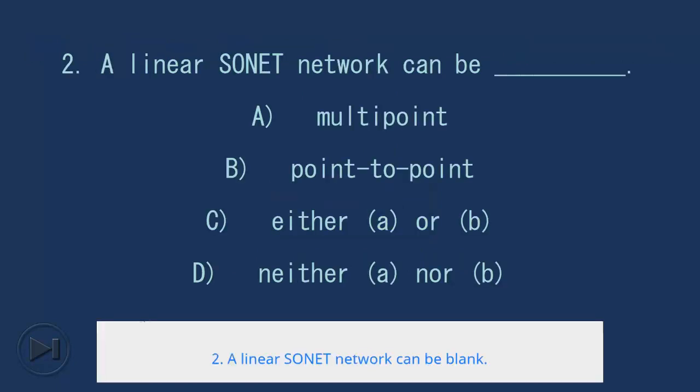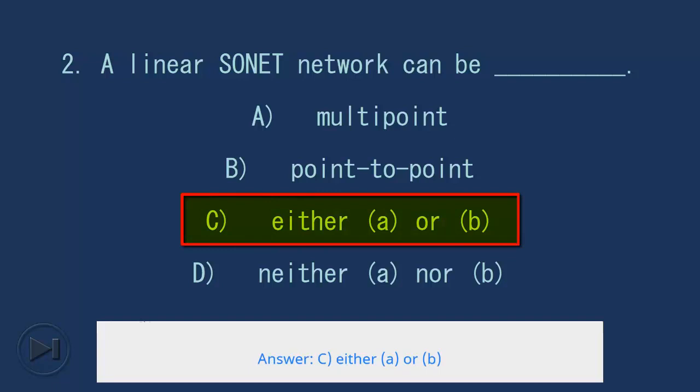2. A linear SONET network can be blank. A. Multipoint, B. Point-to-point, C. Either A or B, D. Neither A nor B. Answer: C. Either A or B.